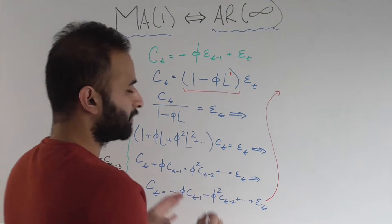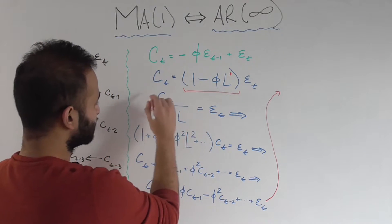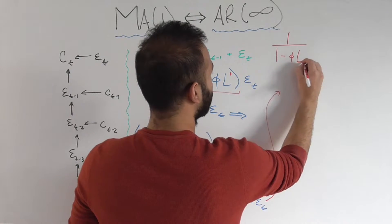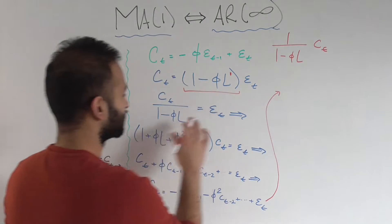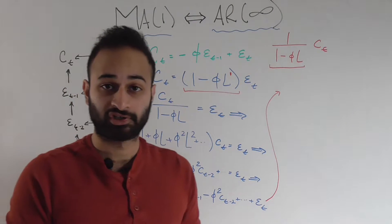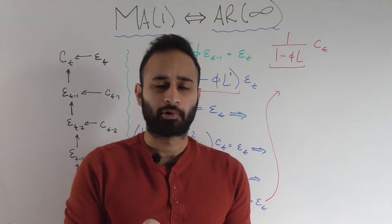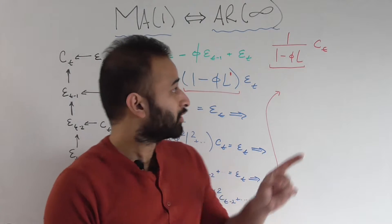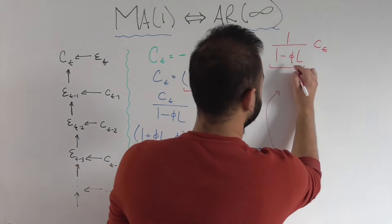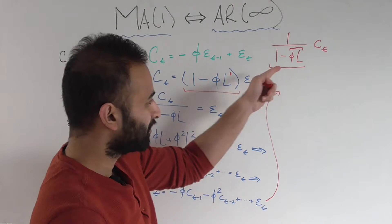Now here is the part that maybe is a little bit confusing. But this right here, so you see how this is C sub t over 1 minus phi L. So that's really 1 over 1 minus phi L times C sub t, right? This thing right here you'll recognize as an infinite geometric sum. So if you go back to your geometry textbooks or algebra textbooks probably, and you look at what's the formula for an infinite geometric sum, it's going to be this, where the common ratio between the terms is this thing right here, this phi L.